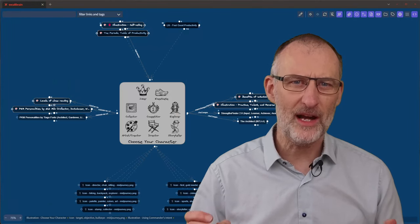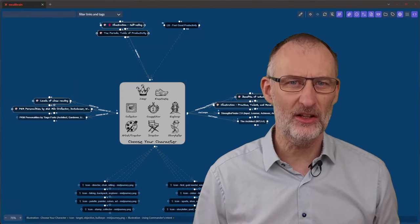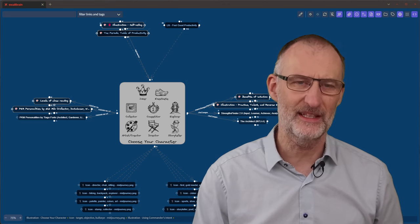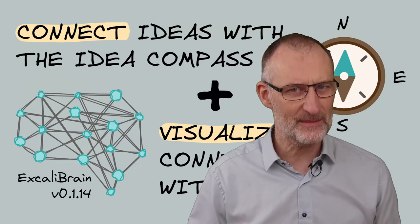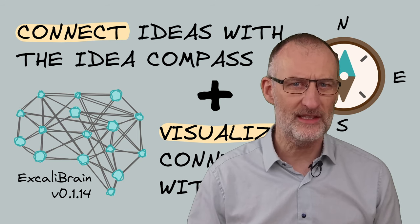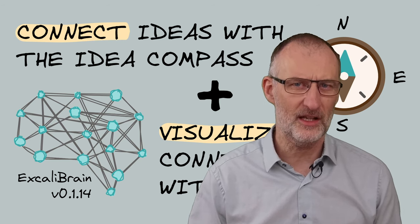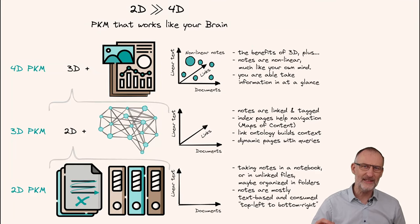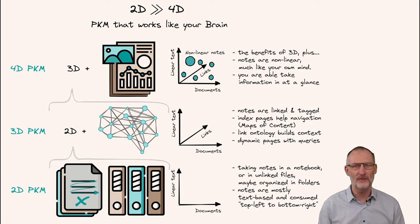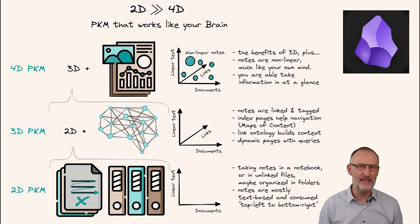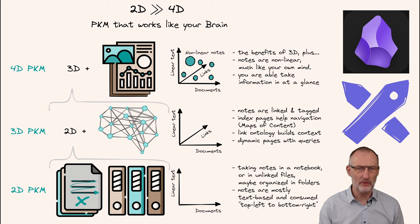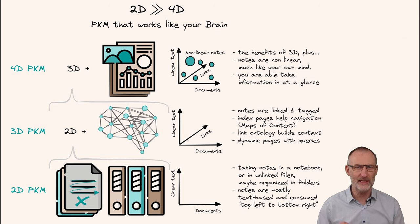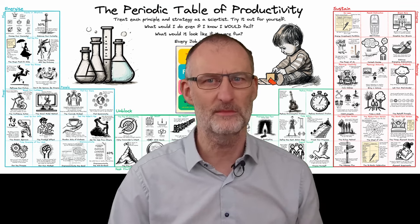We'll look at how I've connected the ideas in Ali's book with other ideas in my Obsidian Vault. We'll explore how I've applied the concept of the Compass of Zettelkasten for creating these connections. We'll talk about the concept of 4D personal knowledge management, in short 4D PKM, and how I use Obsidian MD plus the Xcoli Draw and Xcoli Brain plugins as my 4D PKM system, and a whole lot more.